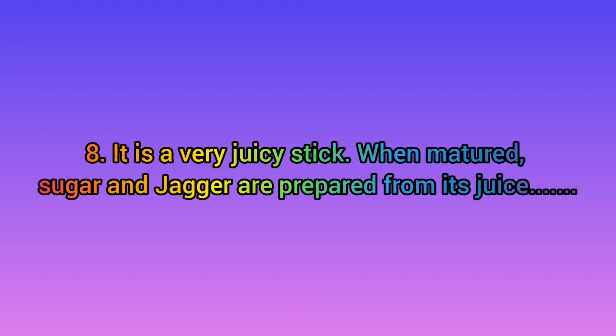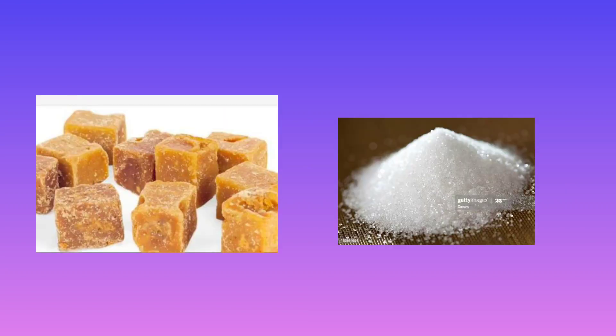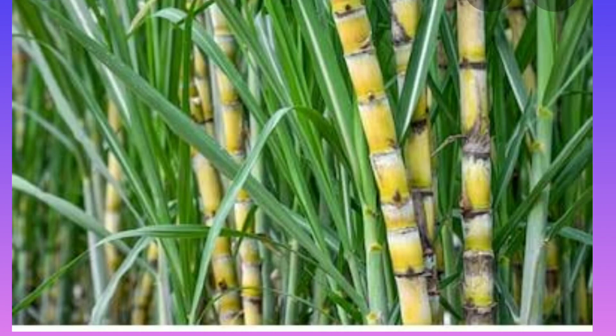Let us go to the last one. It is a very juicy stalk, and when matured, sugar and jaggery are prepared from its juice. Dear children, you all like sugar and jaggery. From which plant do we get sugar and jaggery? We get sugar and jaggery from the sugar cane plant. Sugar cane is very tasty. We can make jaggery and white sugar from it. It improves our digestive system and reduces bad cholesterol.